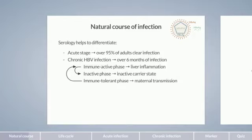This list of chronic forms is not exhaustive and there are further special constellations. However, if you keep these three phases in mind — immune-active, inactive, and immune-tolerant chronic hepatitis B — that's a solid basis.